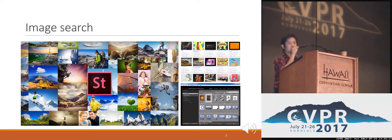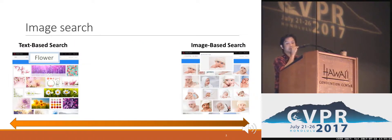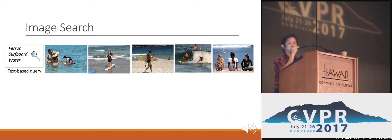Image search is an essential technology and has many important applications. Over the past decades, there are many advanced image search systems that have been developed. Existing image search methods mostly focus on traditional image search paradigms such as search by text or search by example. Those advanced methods have become more and more effective in retrieving relevant image content.